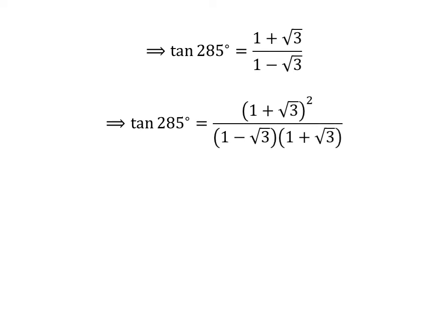Let us rationalize the fraction. Multiplying the numerator and the denominator by a common factor does not change the value of the fraction. So, let us multiply the numerator and the denominator by 1 plus square root of 3. We get tangent of 285 degrees is equal to the square of 1 plus square root of 3 upon 1 minus square root of 3 times 1 plus square root of 3.